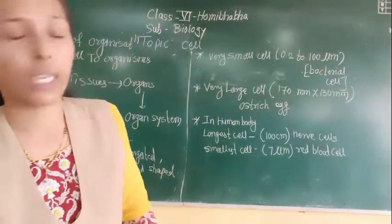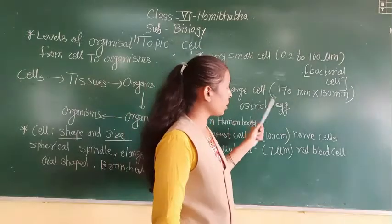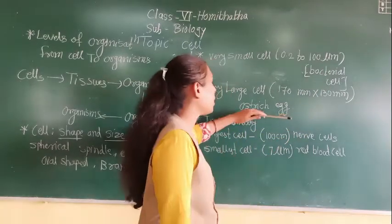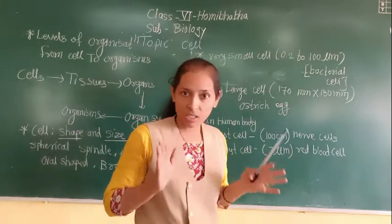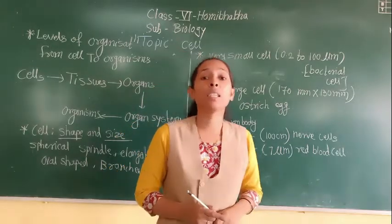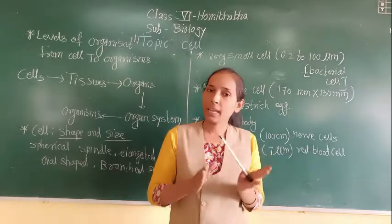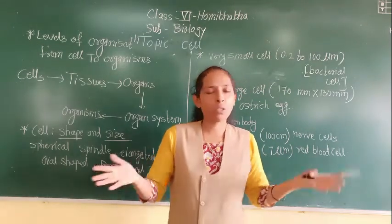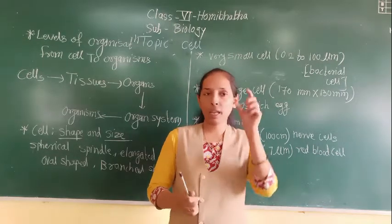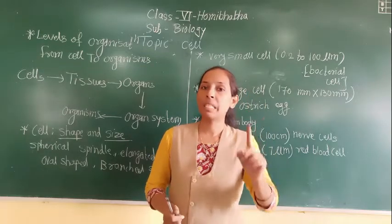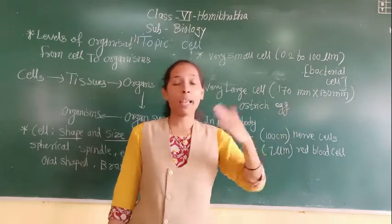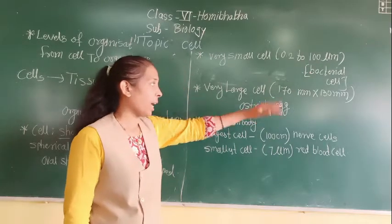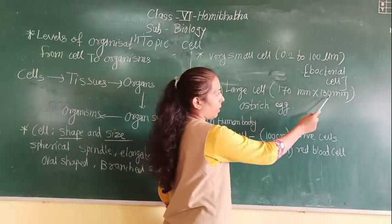The very large cell measures 170 millimetres to 130 millimetres, and that is nothing but the ostrich egg. The ostrich egg is the largest egg, and any egg we see is nothing but a single cell. A hen's egg is also a single cell that we can easily see with our naked eye — no microscope is needed. The ostrich egg is the largest single cell, measuring 170 mm to 140 mm.